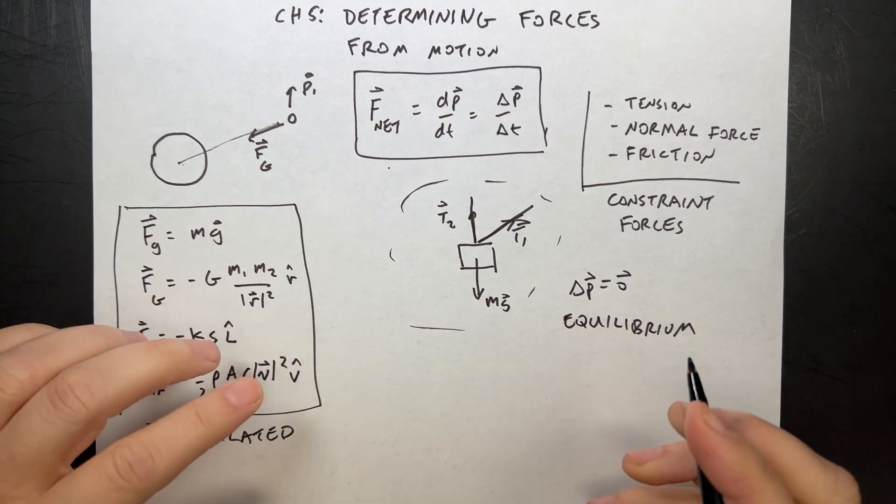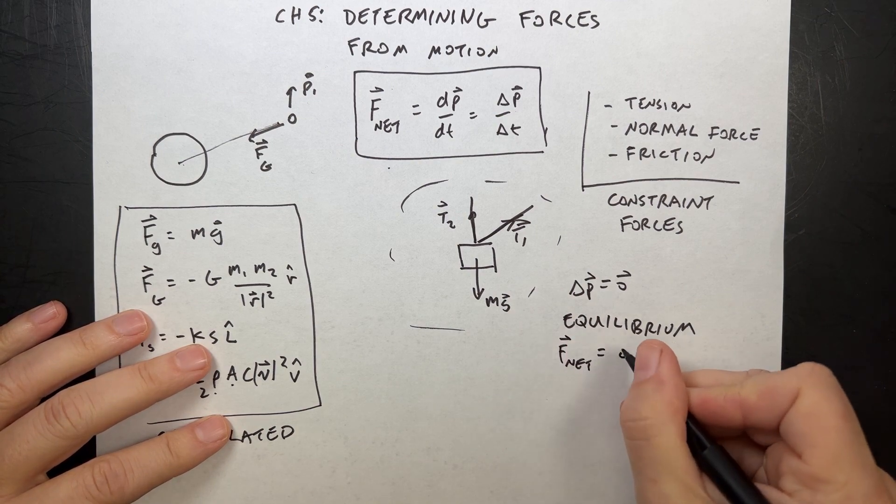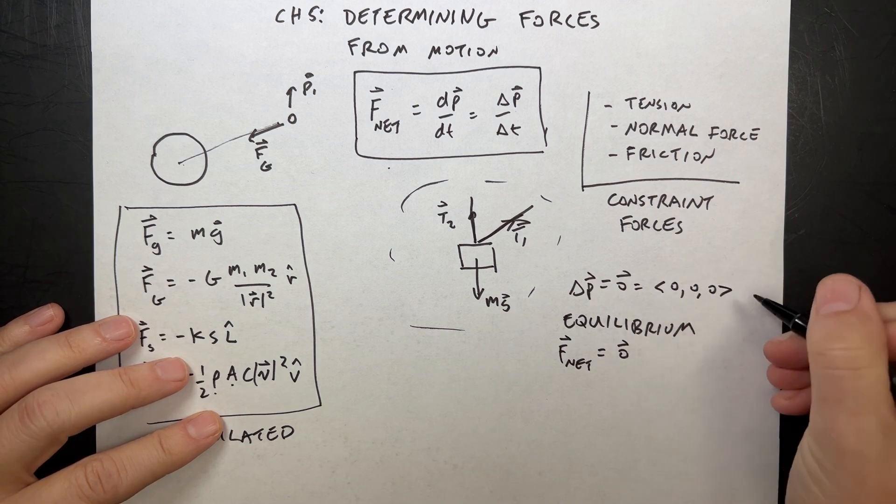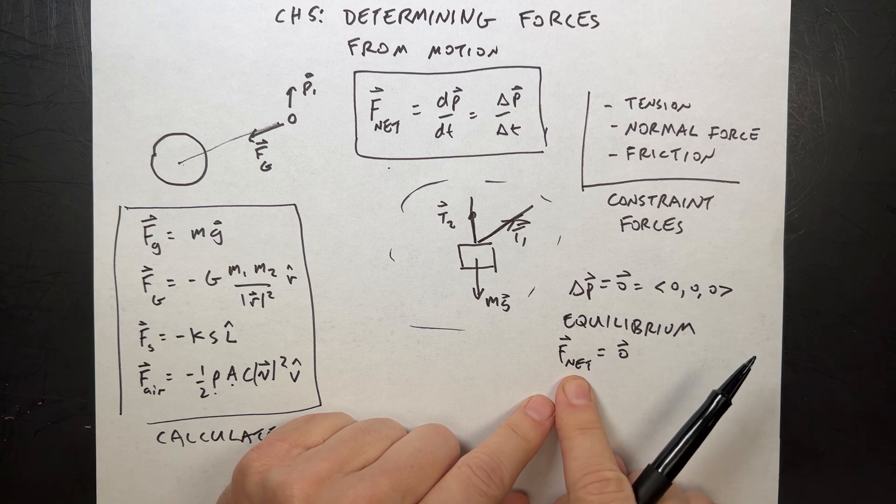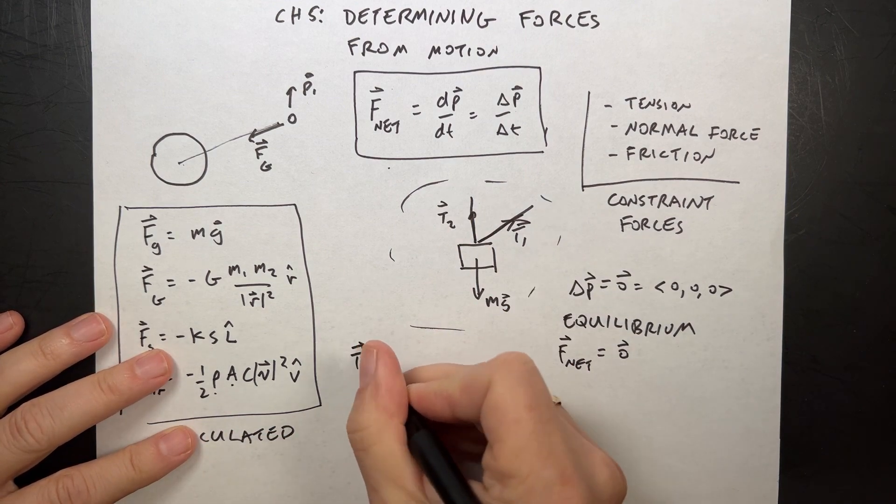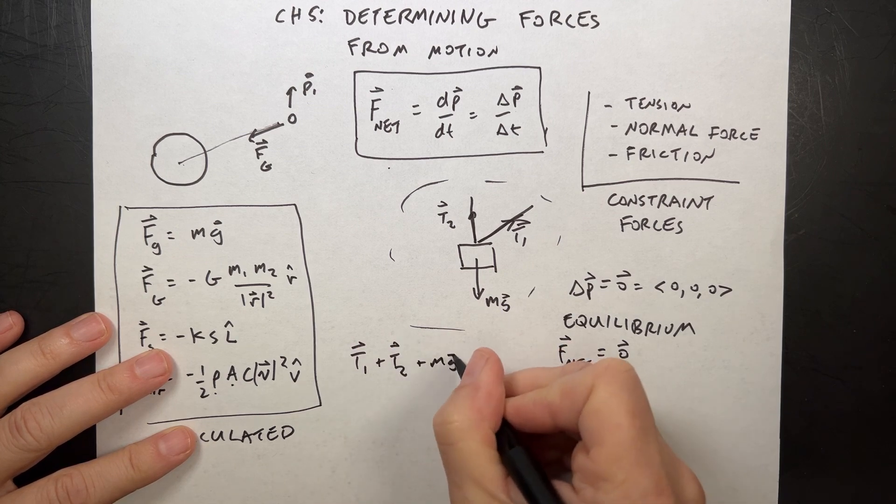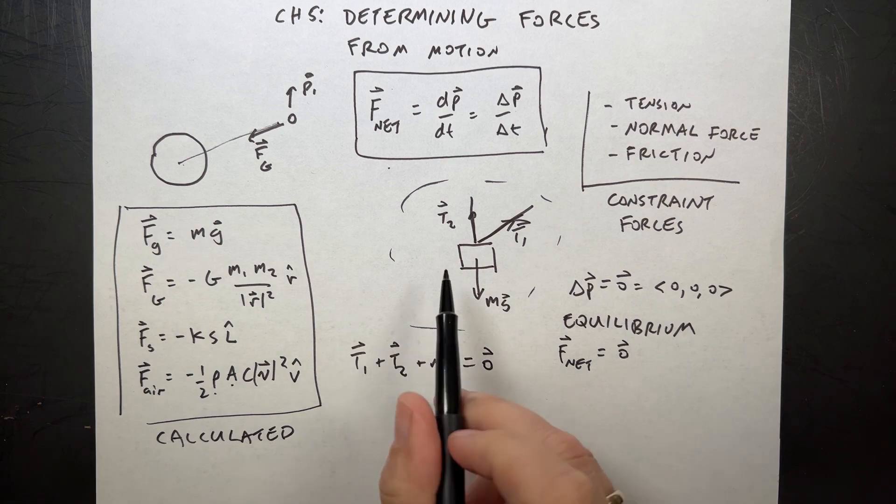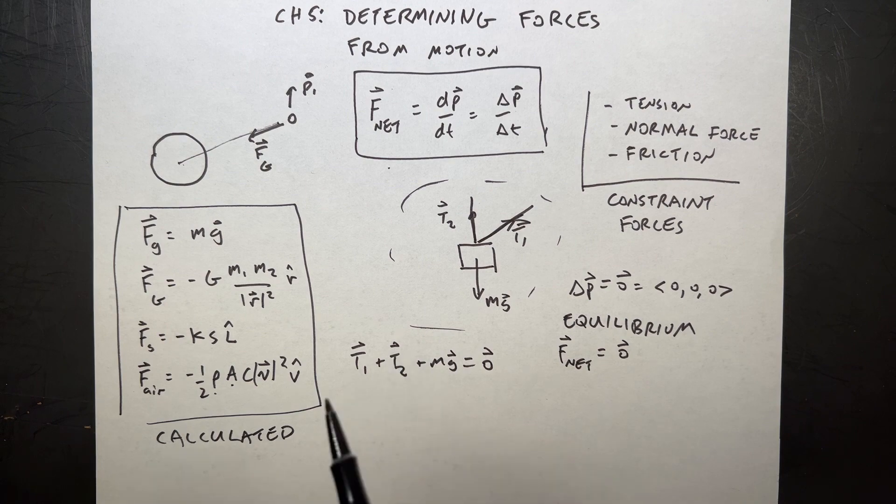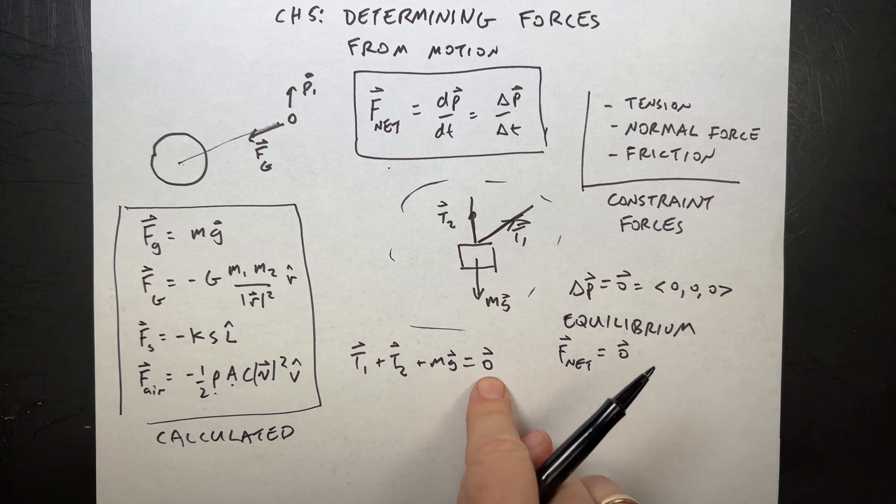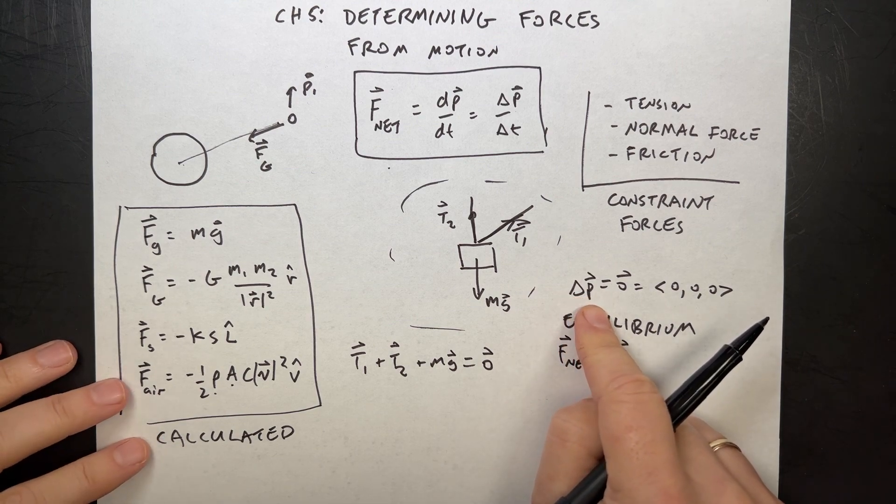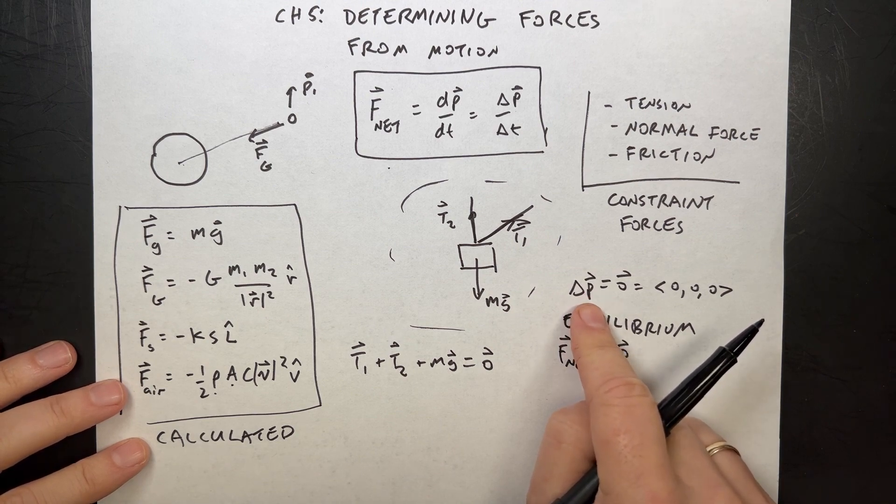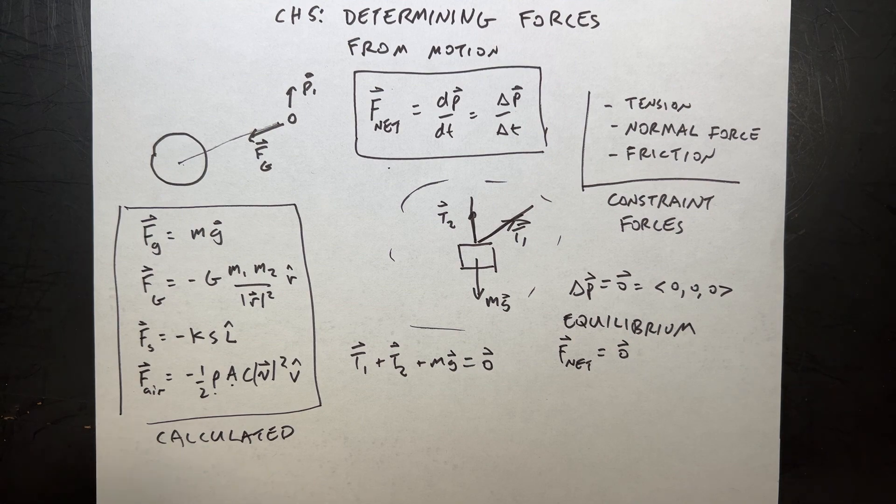If that's the case, and I go back up here, if delta p is zero, then F net is equal to zero vector. Zero vector is the vector in Cartesian coordinates, zero, zero, zero. It's not just zero. It is a vector. It's just a zero vector. So in equilibrium, I know something about the motion, and therefore, I know F net is zero. So in this case, I could write t1 vector plus t2 vector plus mg vector equals zero vector. So maybe I could find out something about these forces. So it doesn't have to be p is zero. It just means it has to have no change in momentum. So if you have a car moving at a constant velocity in a constant direction, that's equilibrium.